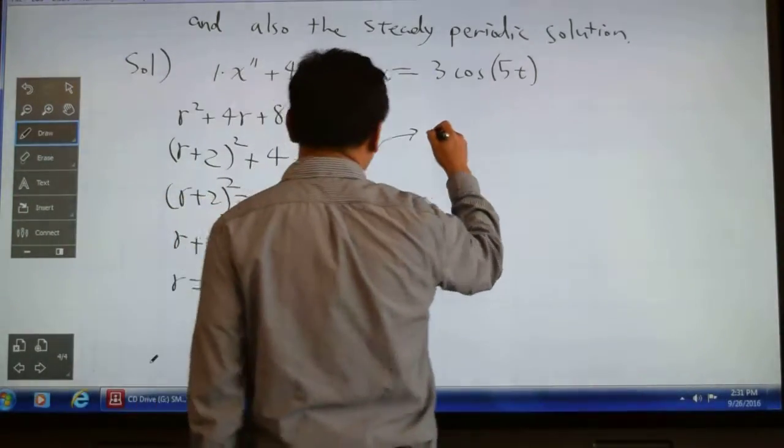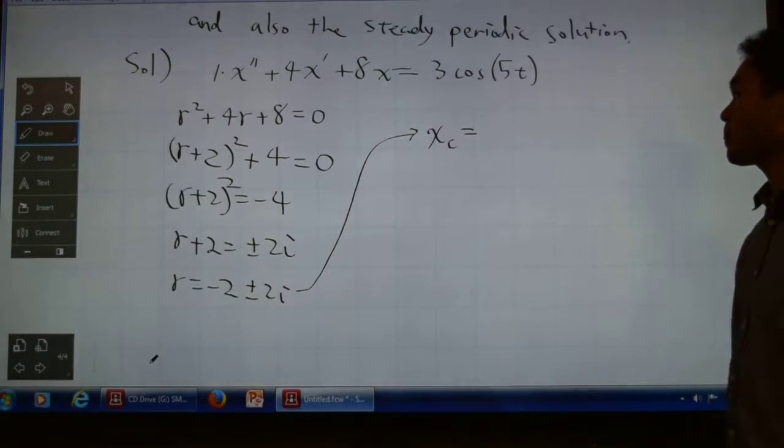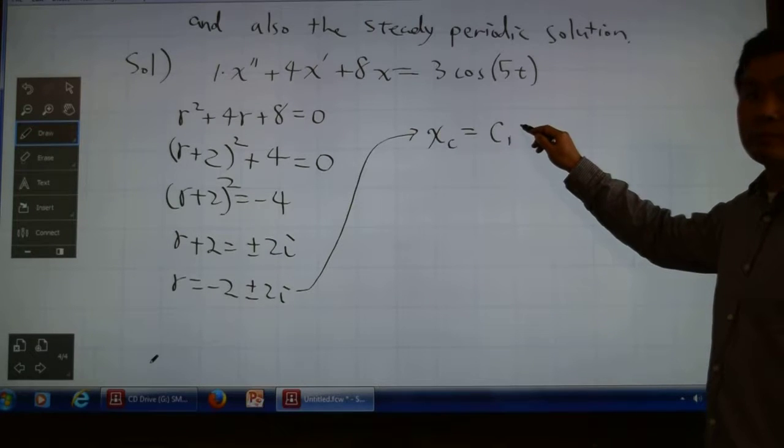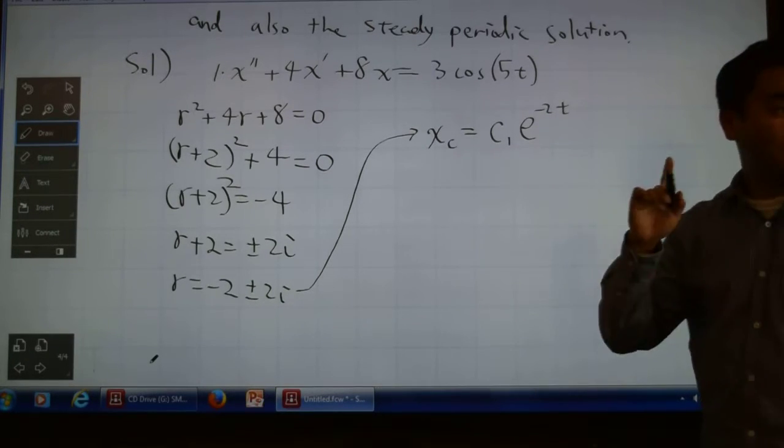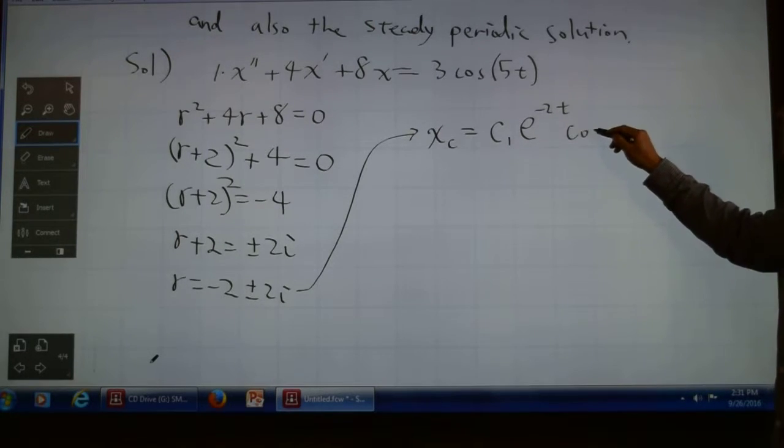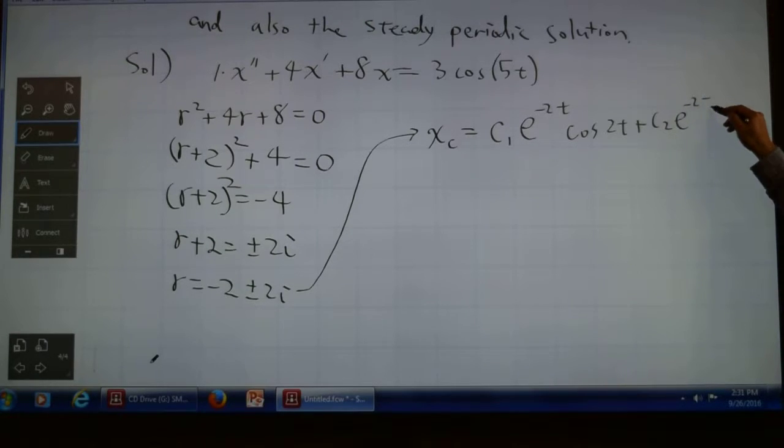Which tells you that x_c = c1·e^(-2t)·cos(2t) + c2·e^(-2t)·sin(2t). That's the complementary solution.